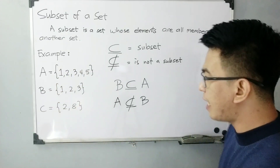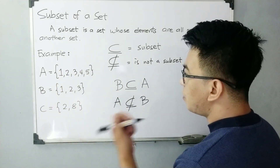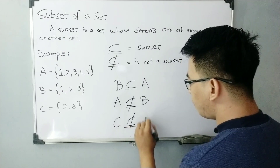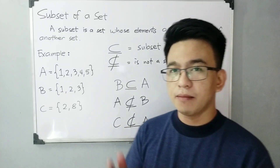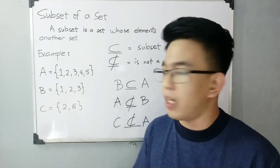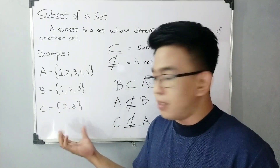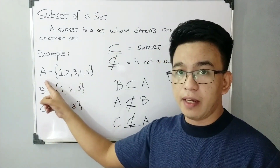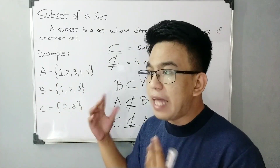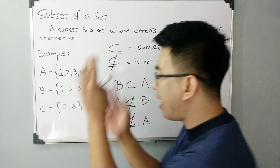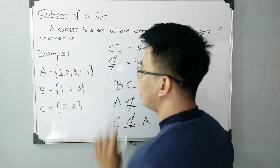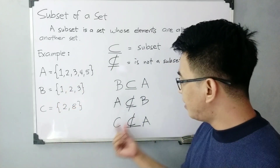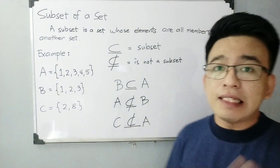So how about set C — is set C a subset of A? No. Set C is not a subset of A. You need to check if 100% of the elements of set C are inside set A. As you can see, 8 is not existing in the elements of A. That's why set C is not a subset of set A.